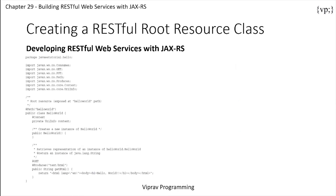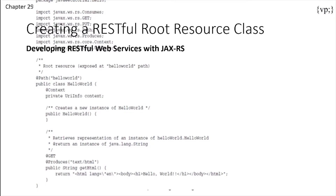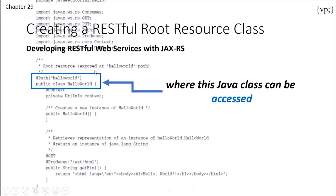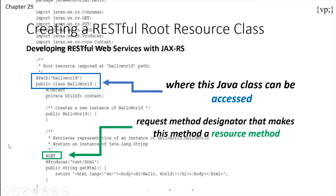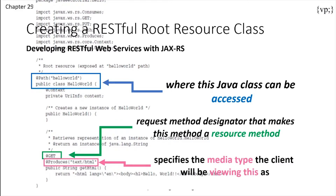So let's take a look at some sample code. We can see that @Path('helloworld') tells us where this Java class can be accessed. This is a partial URI, which means that whenever you're putting a URI in your browser, you put the HTTP address and then slash, and this slash will include the 'helloworld'. Then there's @GET, which is our request method designator, which makes this entire method a resource method. And then there's the @Produces annotation, which specifies the media type the client will be viewing this as — in this case, you will be seeing this code in an HTML format.